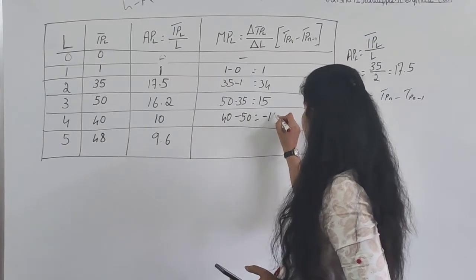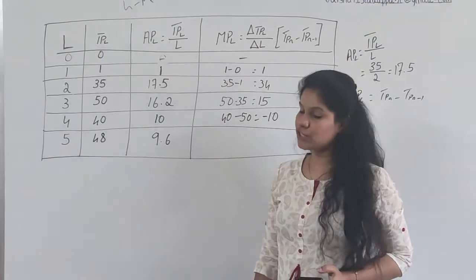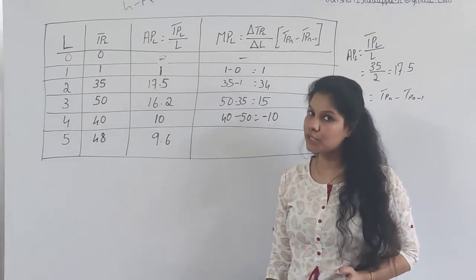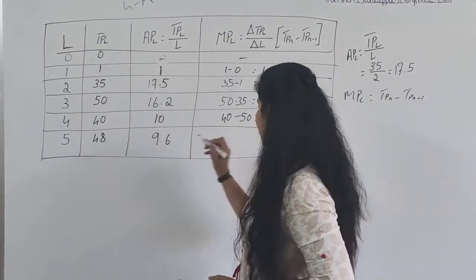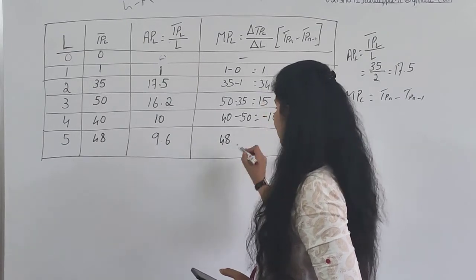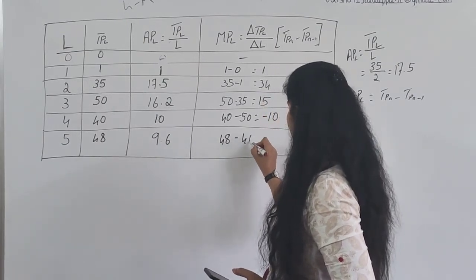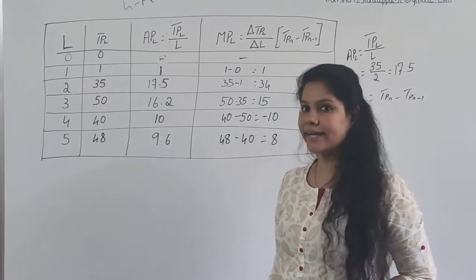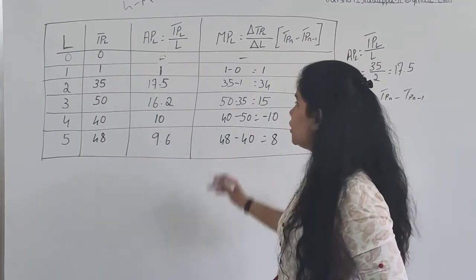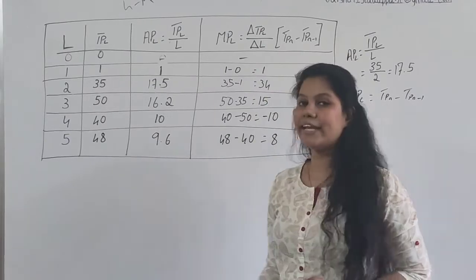Marginal product is not only diminishing, it's reaching negative. So 48, 48 minus 40, the answer is 8. Again it started increasing. This is the way you calculate.